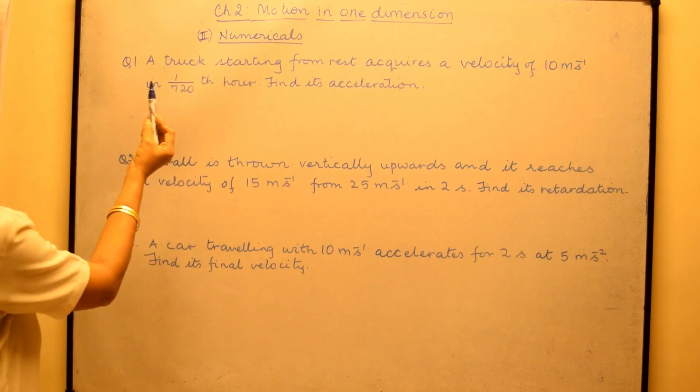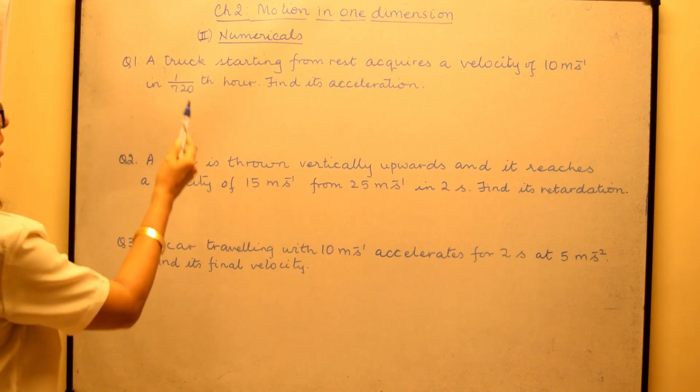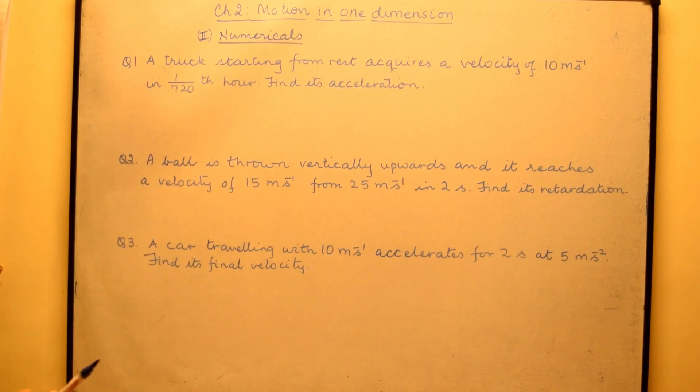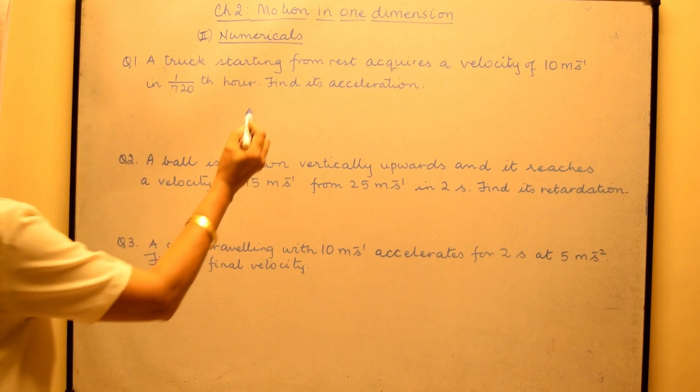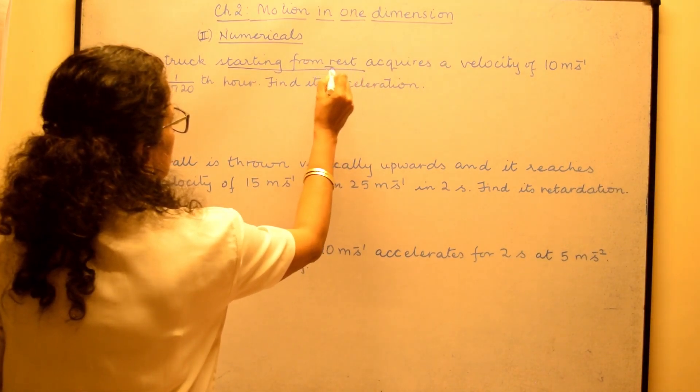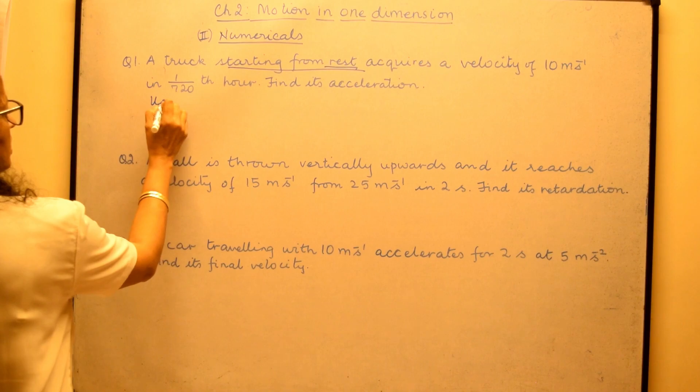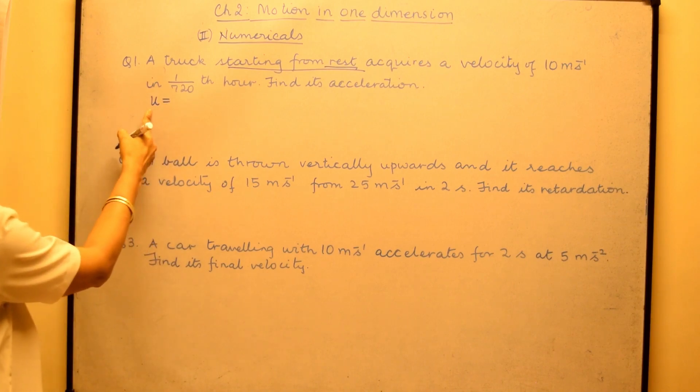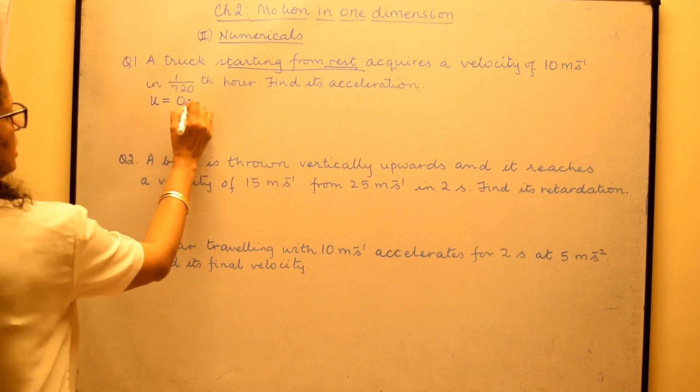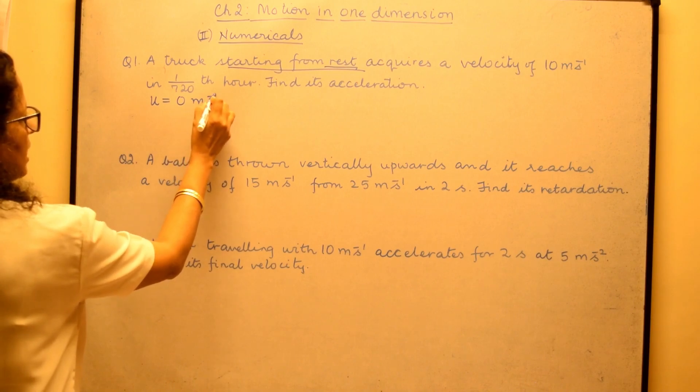Now the numericals would be something like this. A truck starting from rest acquires a velocity of 10 meter per second in 1 upon 720th of an hour. Find its acceleration. Now any time you see starting from rest, the moment you say starting from rest that means initial velocity which is represented by u is 0 meter per second.